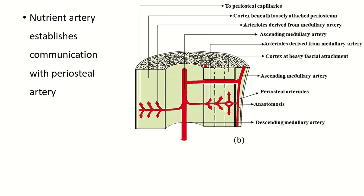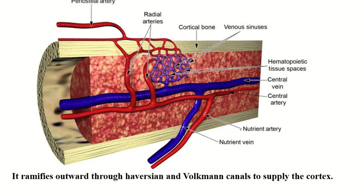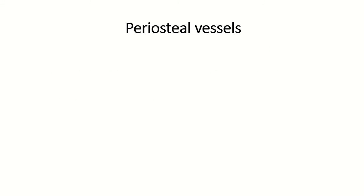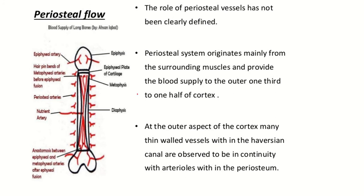The clinical importance of the nutrient vessels: hematogenous osteomyelitis is easily caused by bacteria and most commonly affects rapidly growing long bone. Blood flow in the capillary sinusoid loop near the metaphysis is sluggish and turbulent because of the U-shaped loop, causing low blood flow. Phagocytic function is also suboptimal here, and these two factors facilitate deposition of organisms into the metaphyseal tissue.